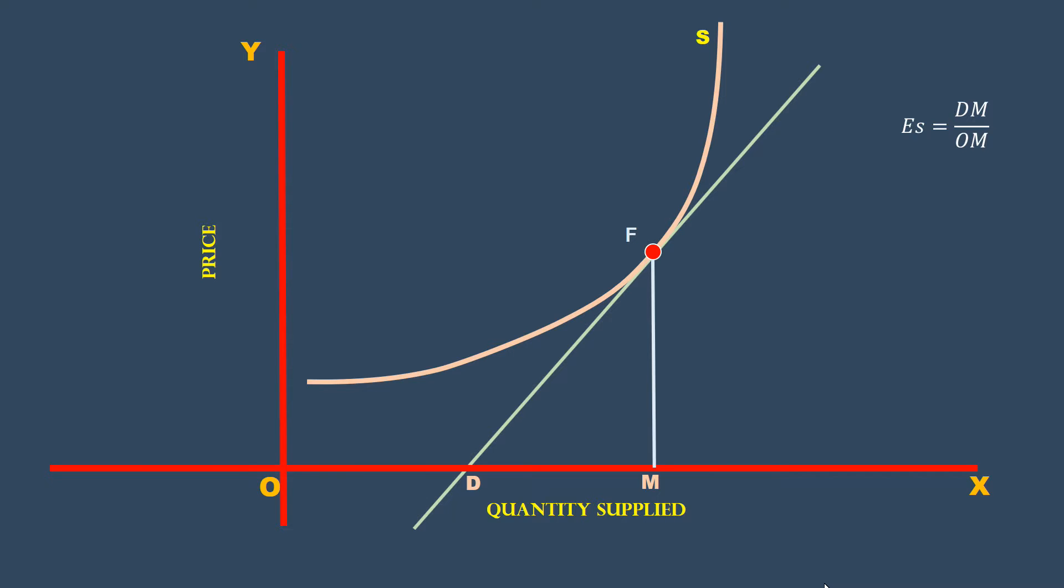Supply at point F is relatively inelastic. Moreover, watch, the tangent is passing through the x-axis. If the tangent drawn to a point on the supply curve passes through the x-axis, supply is relatively inelastic. What is elasticity at point C?